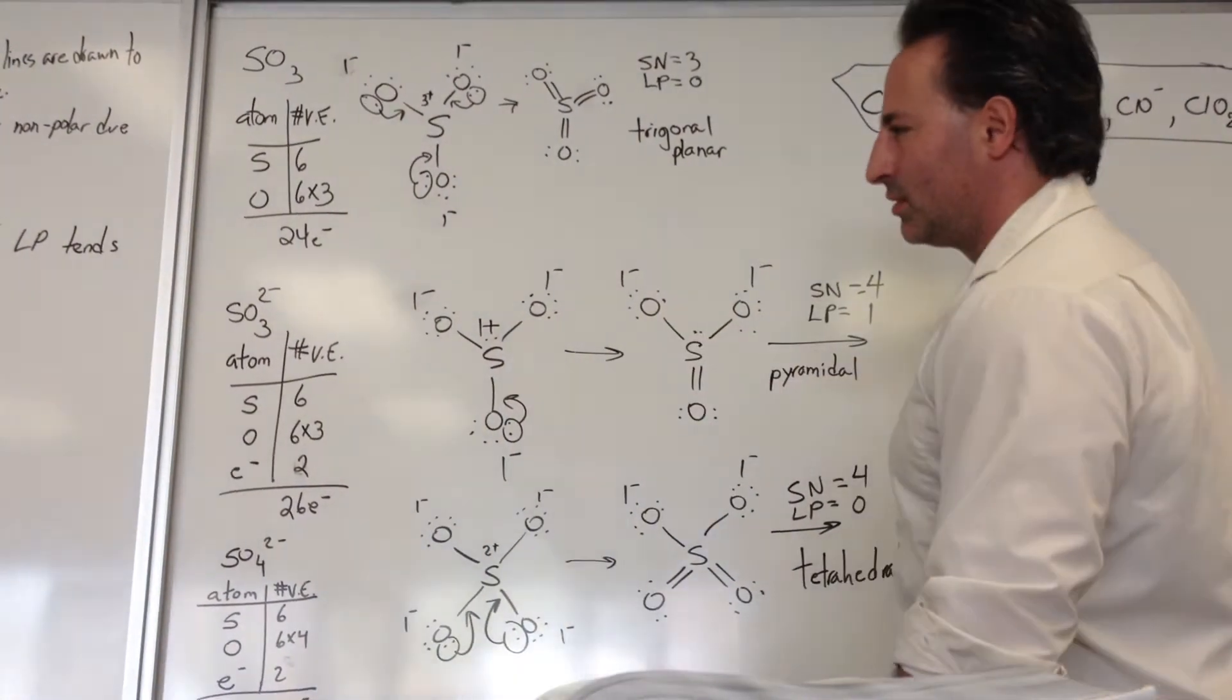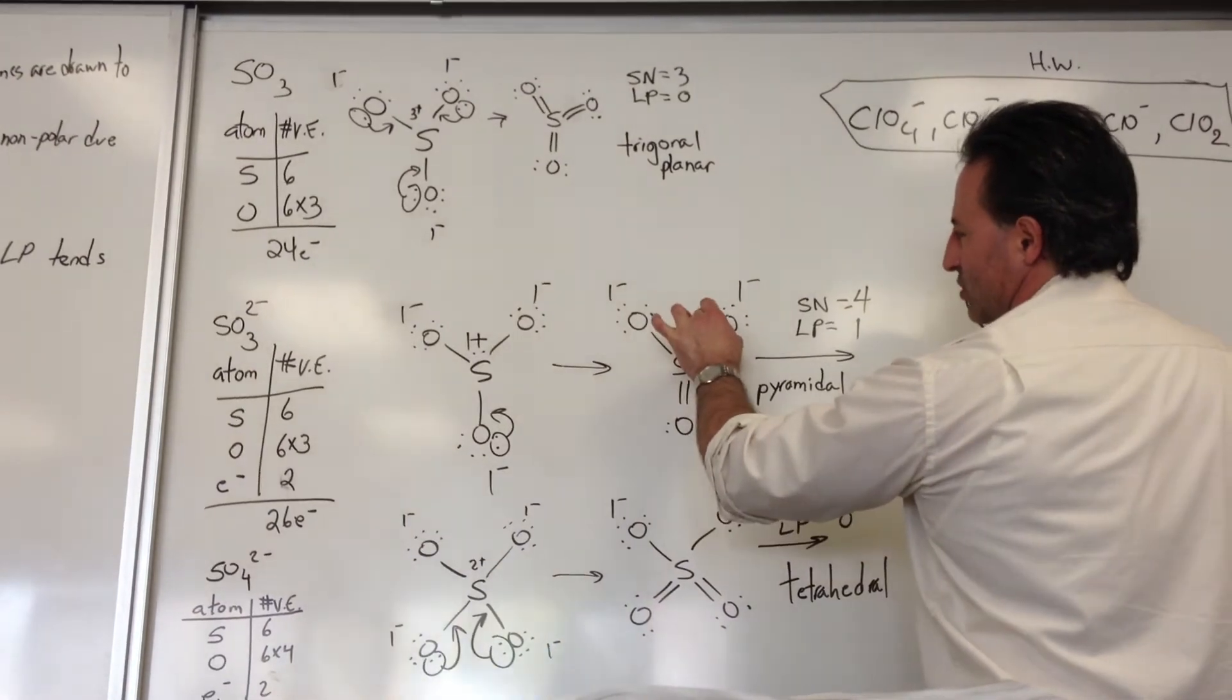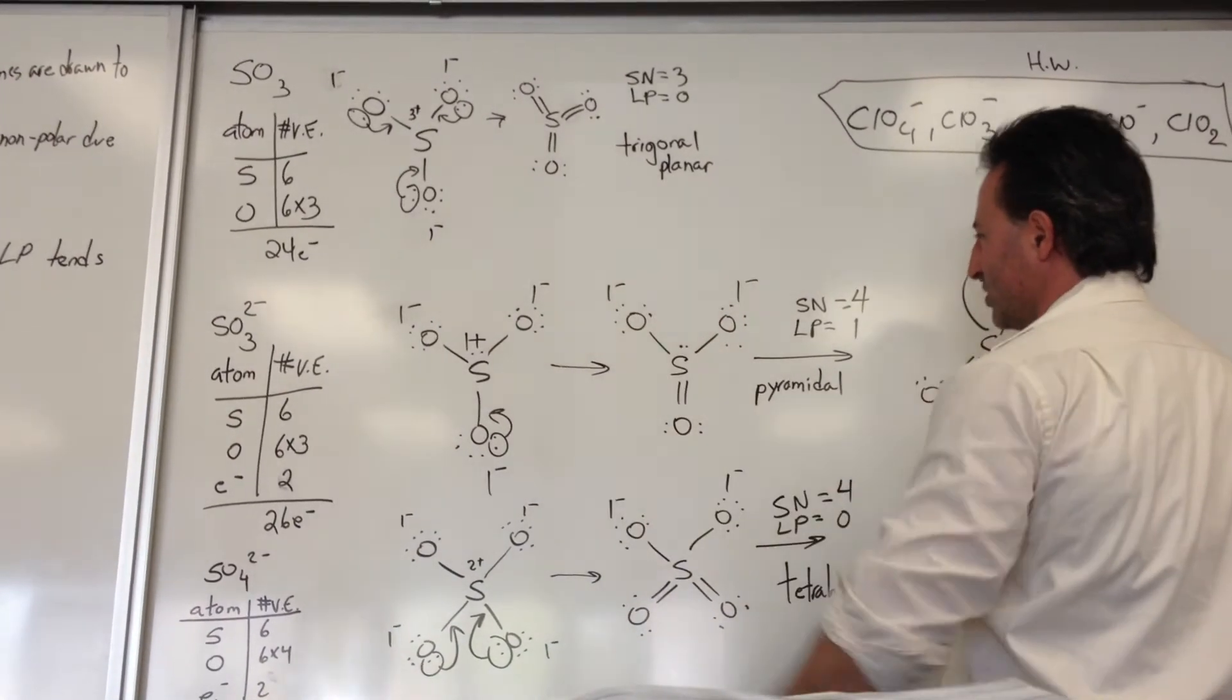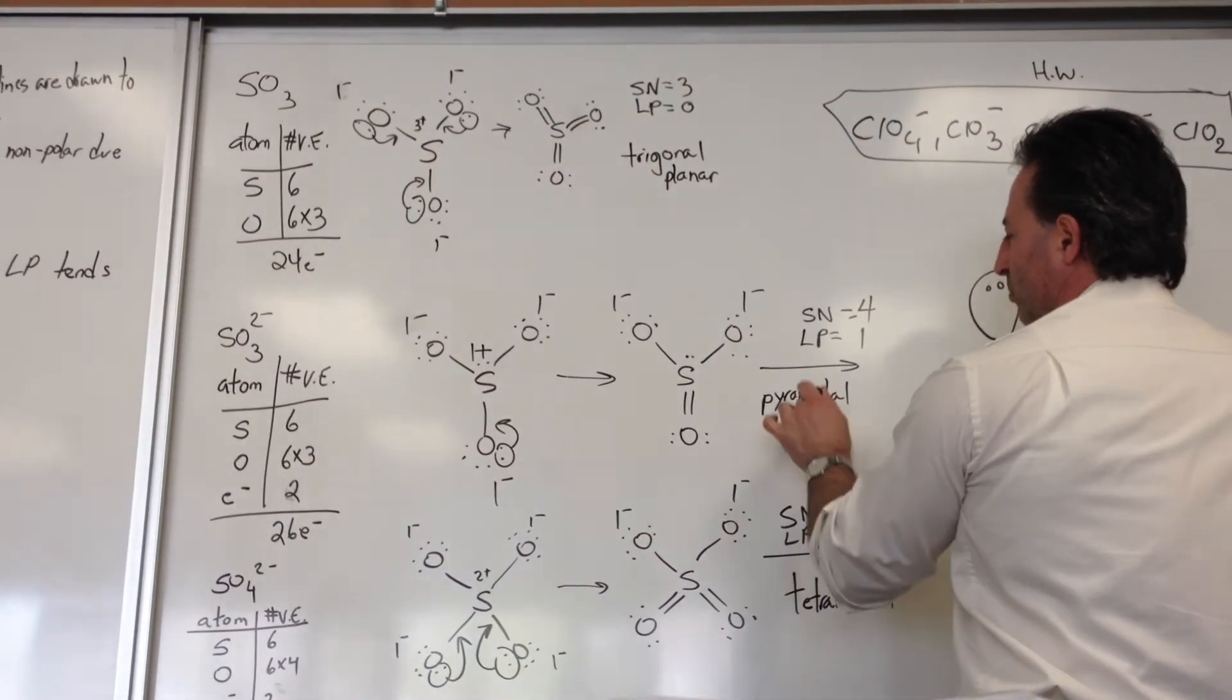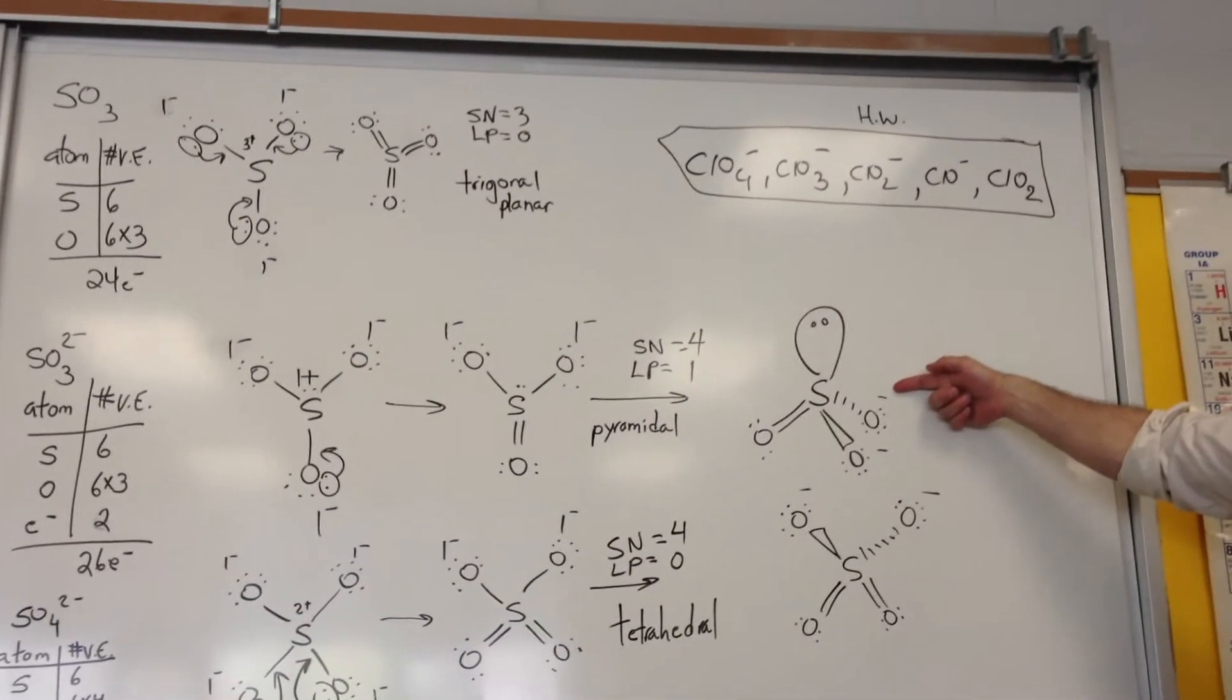The steric number of this central atom is still 4. You have 1, 2, 3 things attached to it, and you count the lone pair as 1. So steric number 4 with one lone pair suggests pyramidal geometry. This is how you would draw it for the sulfite anion.